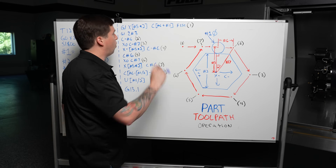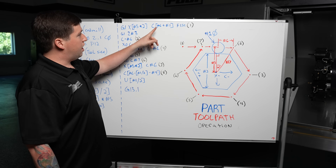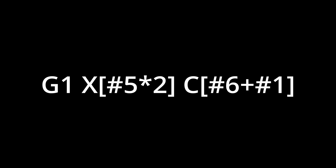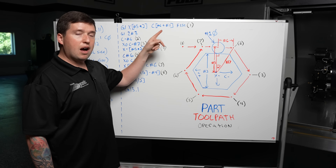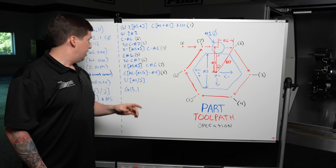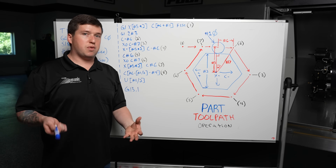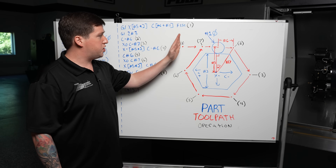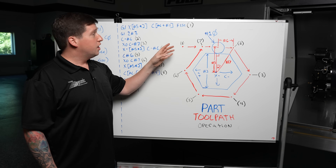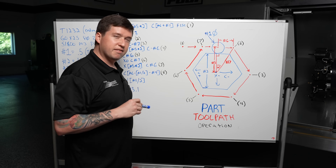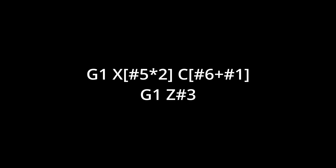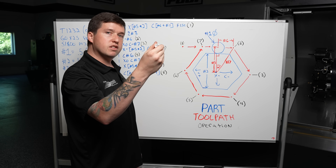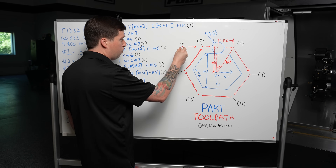Let's start with number one. We know X is going to be pound five times two — that's going to be this position X. C is going to be pound six plus pound one. Right here is C of pound six, X of pound five times two. I took pound one, the whole diameter of our tool, and added it to this position. C works radially, so it gives double the positional clearance — just add the diameter of the tool, and now we are in a safe space. Then I move Z: I say G1 Z of pound three, feeding in to depth.